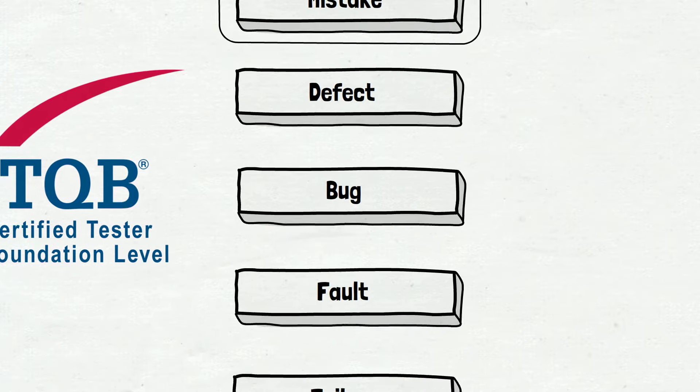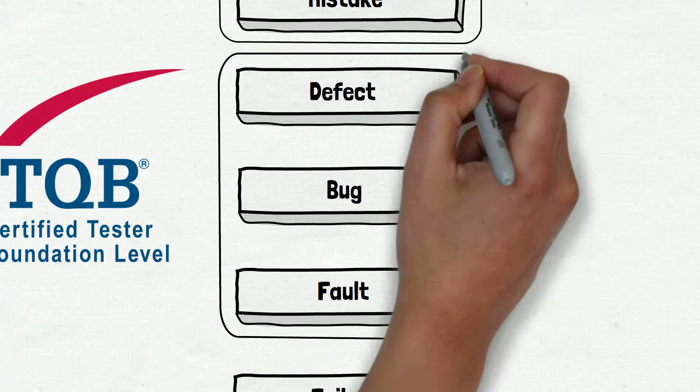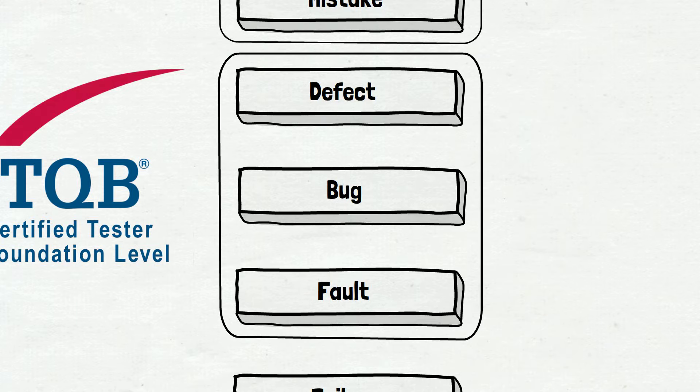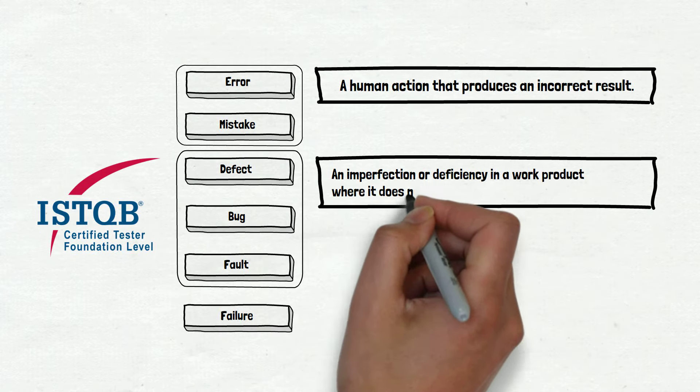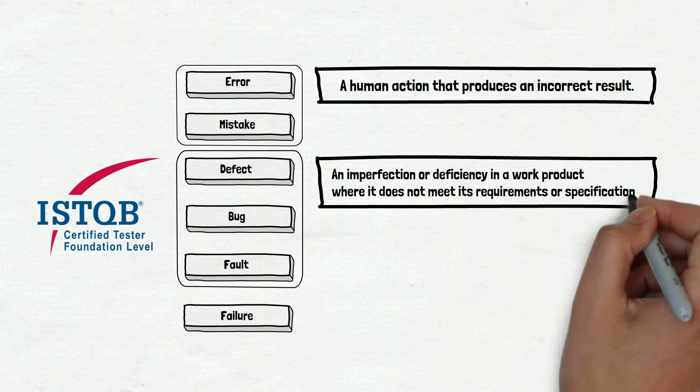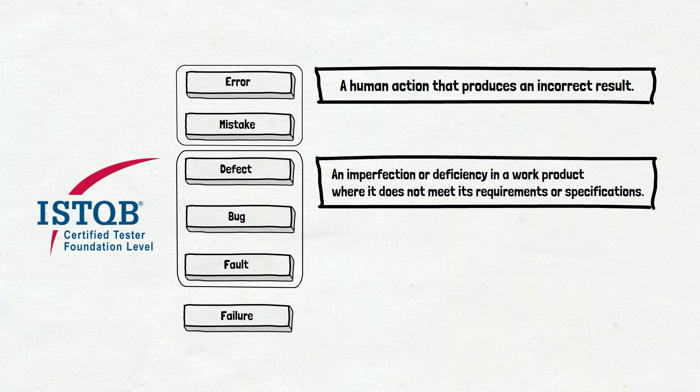The next one is the defect. Similar to error and mistake, the next three words—defect, bug, and fault—are synonyms. The definition sounds like this: An imperfection or deficiency in a work product where it does not meet its requirements or specifications. Very theoretical and hard to understand. So, we'll try to explain it in a minute.